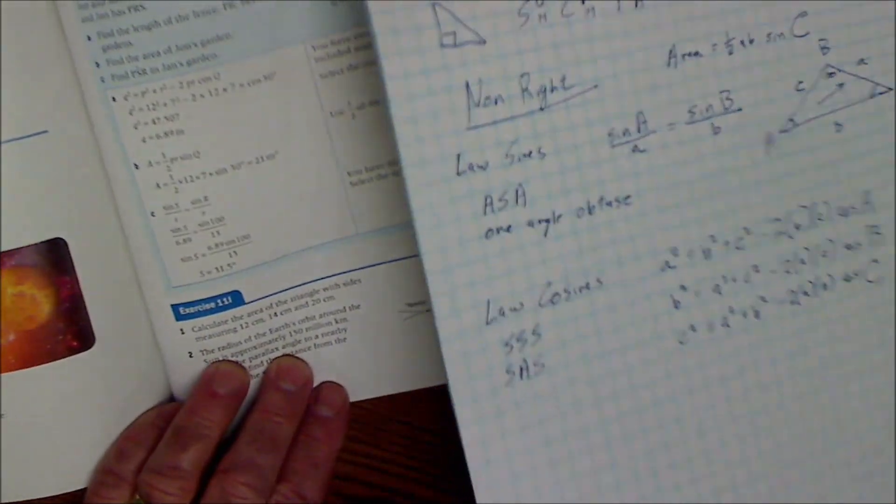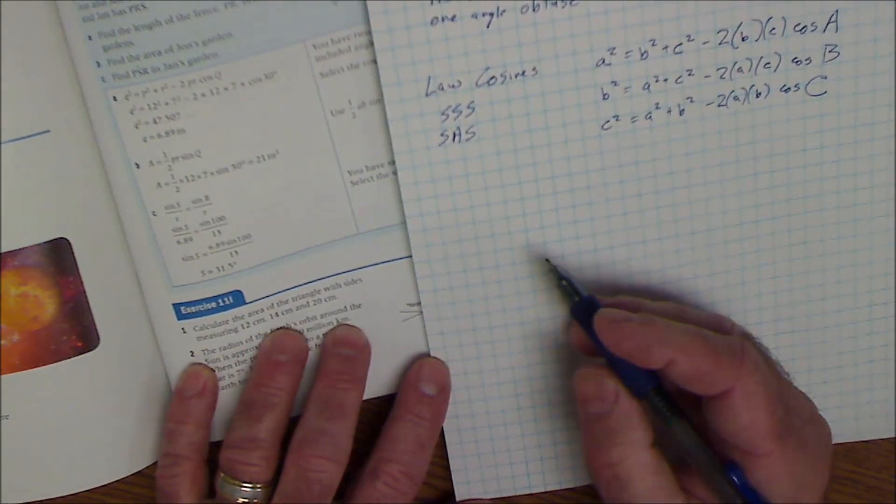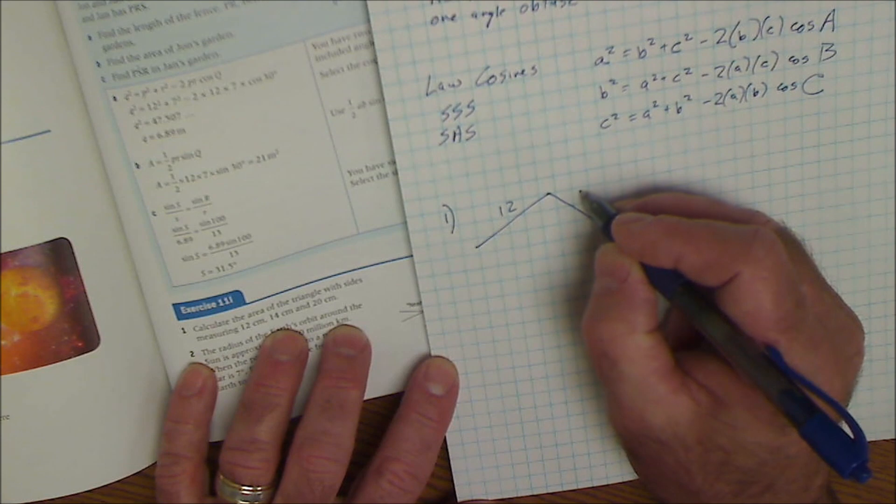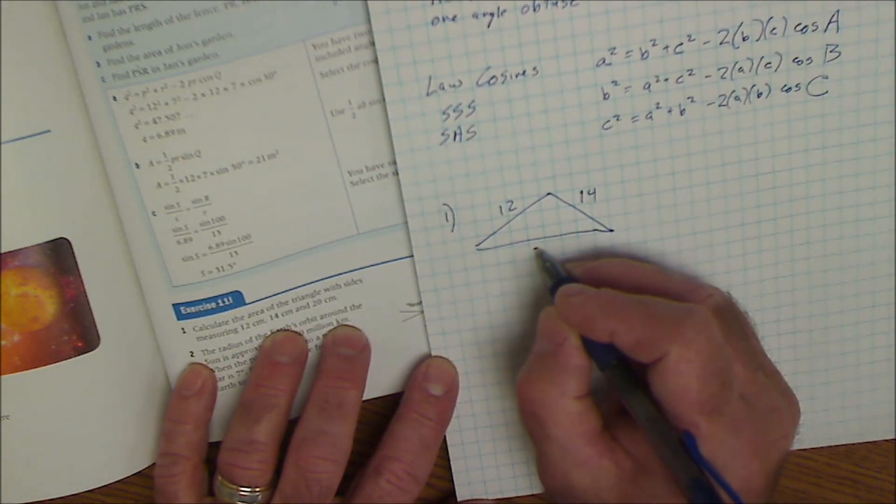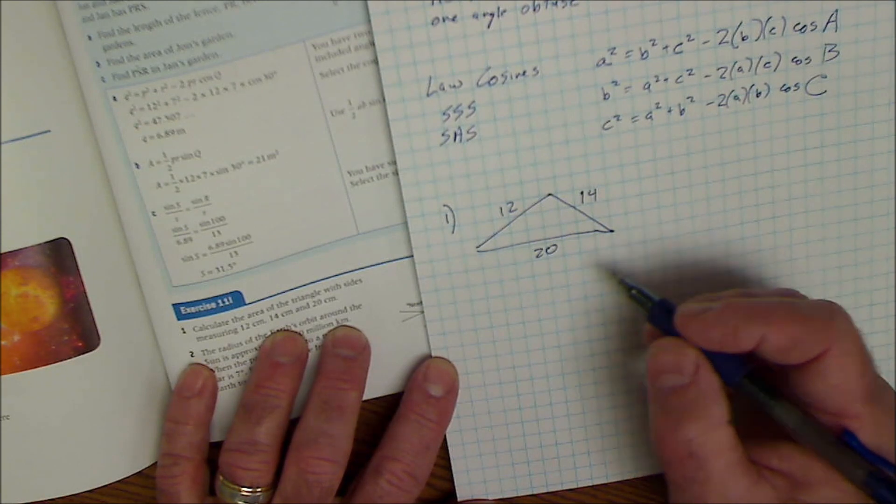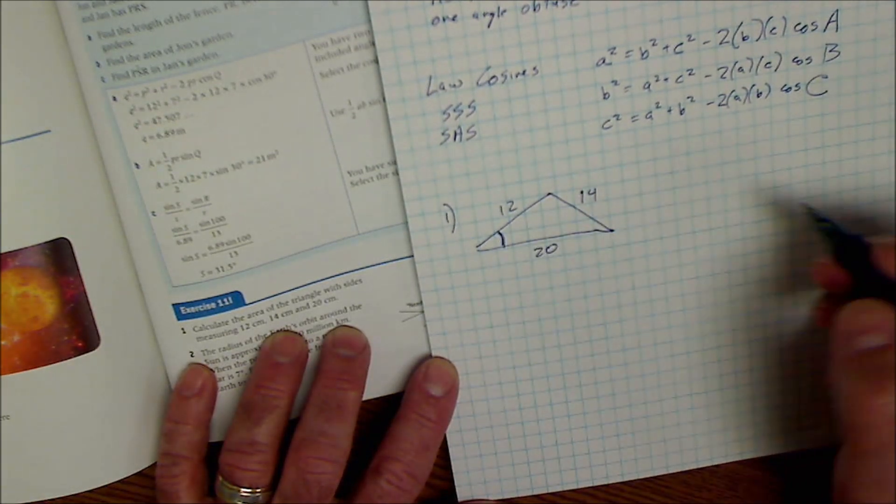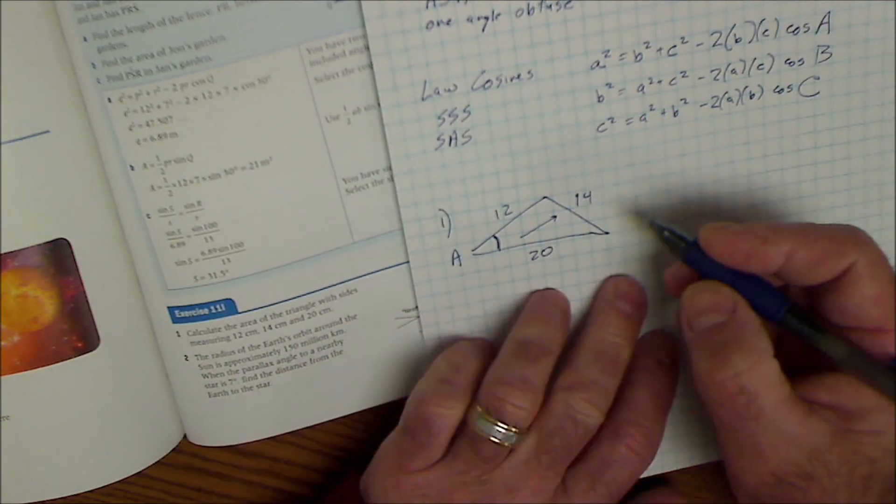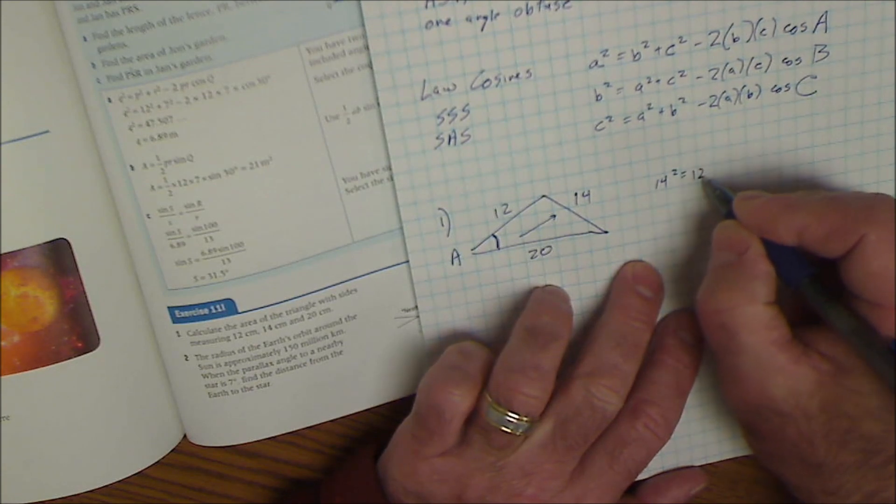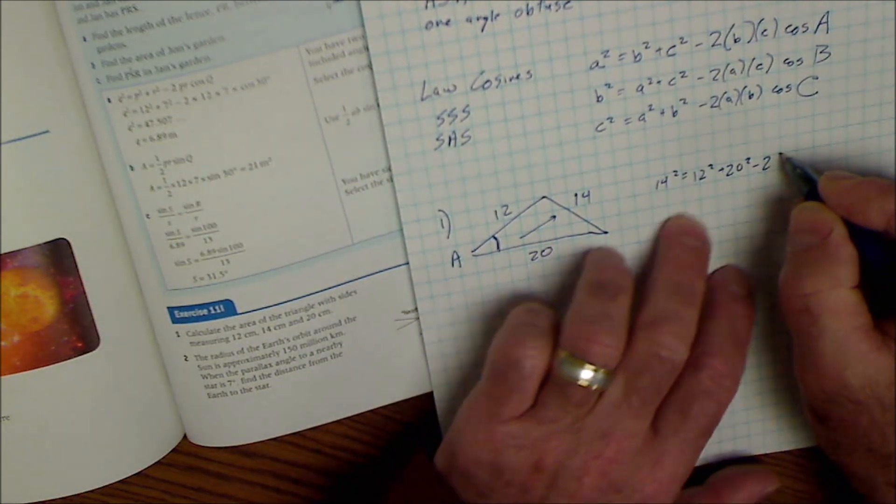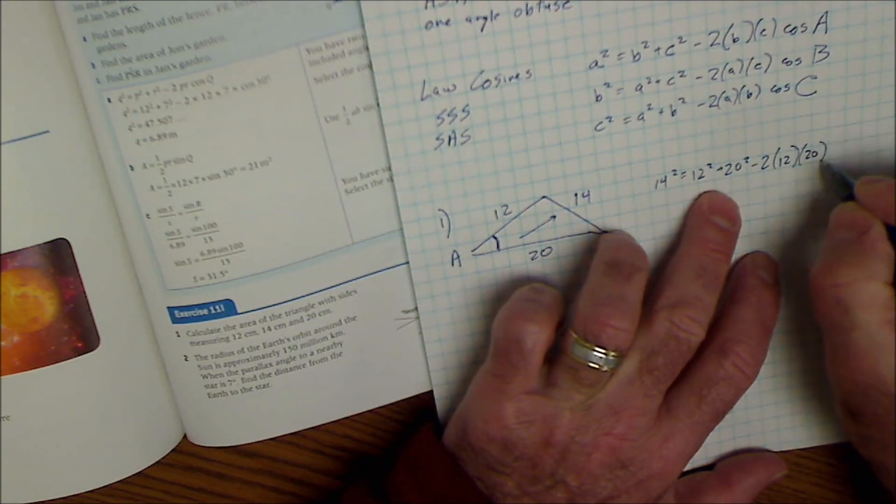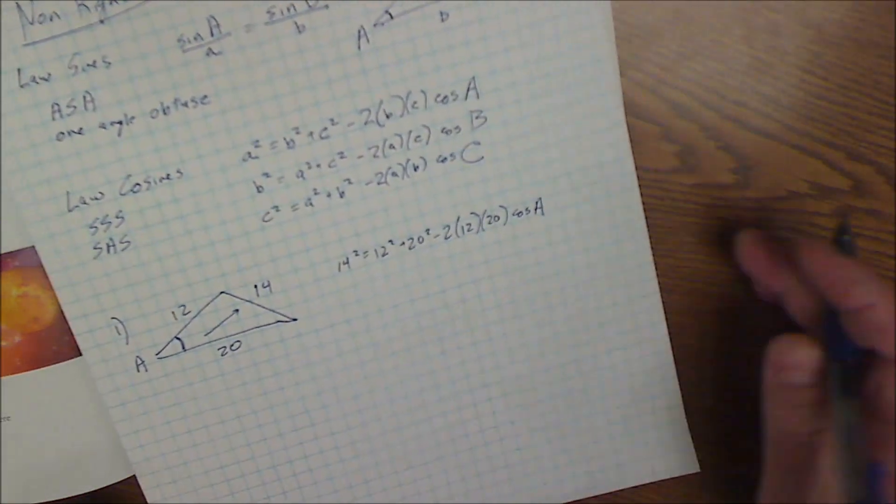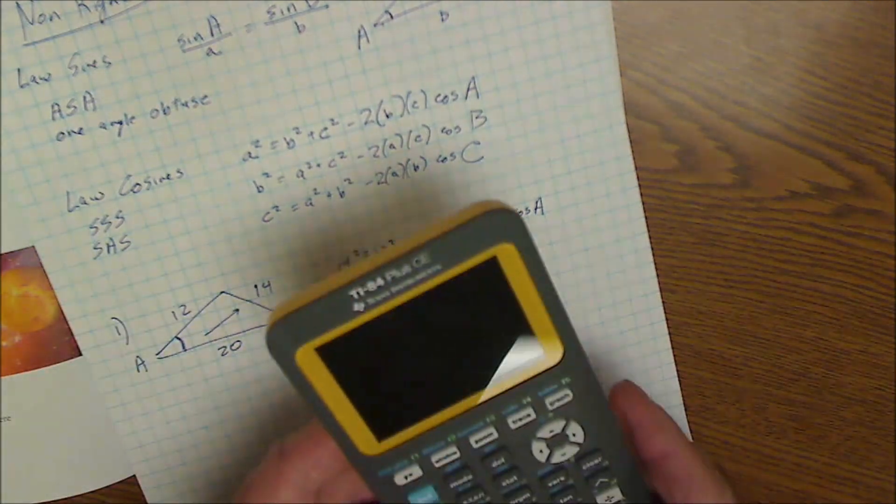Let's go to this first one. Number one, calculate the area of a triangle with sides 12, 14, and 20. If this side were 12, this side were 14, and this side were 20. Calculate the area. I'm going to have to find an angle first. I'm not drawing to scale. I'm going to call this angle A. I'm going to take the side opposite A. 14 squared is equal to 12 squared plus 20 squared minus 2 times 12, 20, cosine of the angle opposite the 14, cosine of A. One equation, one variable.